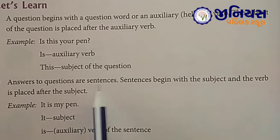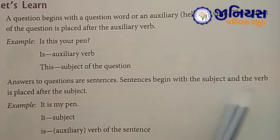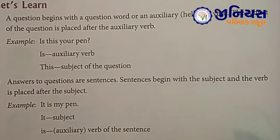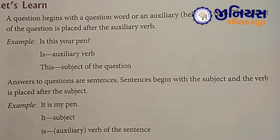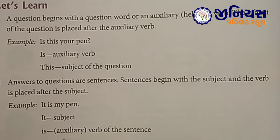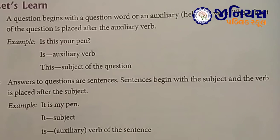Answers to questions are sentences. Sentences begin with the subject, and a verb is placed after the subject. For example: It is my pen. Here 'it' is the subject and 'is' is the auxiliary verb. Question mein auxiliary verb pehle aati hai aur answer mein auxiliary verb subject ke baad aati hai.